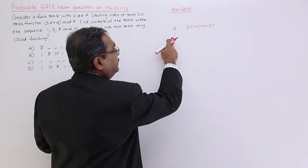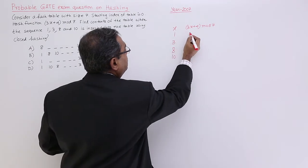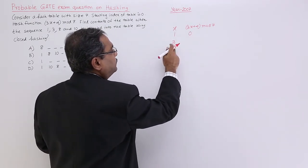Now, 3 into 1, 3 plus 4 is 7 mod 7, which is 0. 3 into 3, 9 plus 4 is 13 mod 7, which is 6.